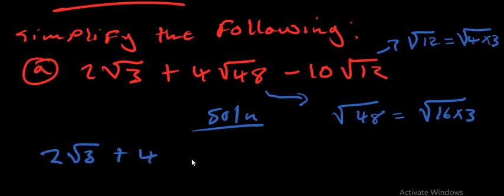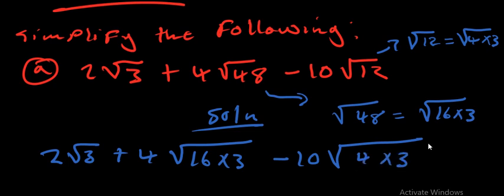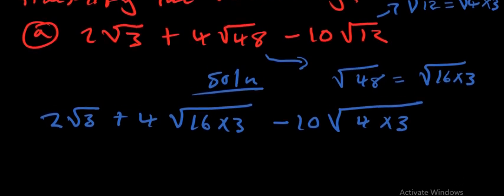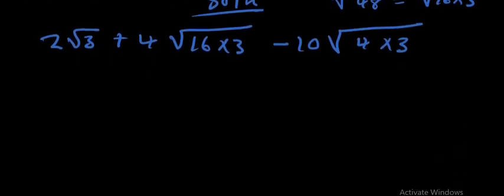We are going to rewrite the expression as: 2√3 + 4√(16 × 3) − 10√(4 × 3). After writing that, the next thing we need to do is apply the rules of surds.